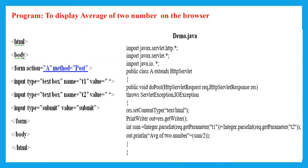Here is a simple program to display the average of two numbers on the browser using the DoPost method. Two files are needed: one HTML file to pass values from the client, and one servlet file to handle input parameters, perform the operation, and return the response. Two input fields T1 and T2 are created, along with a submit button and a form tag.